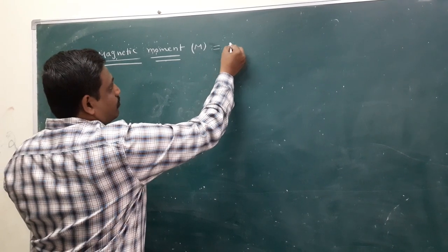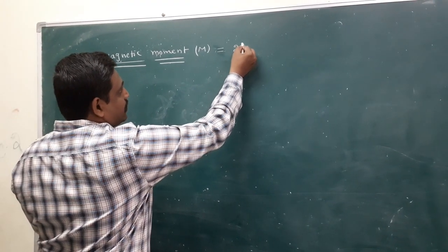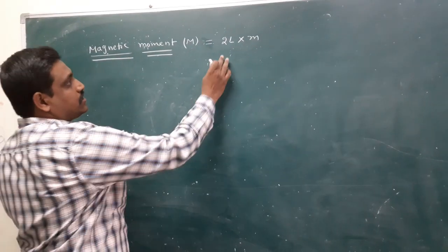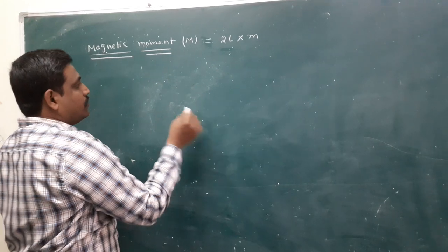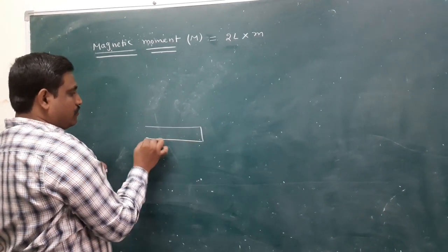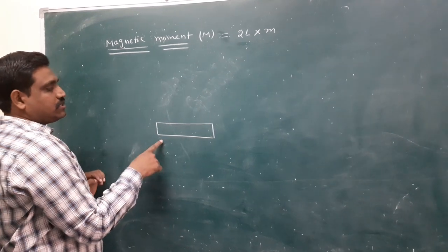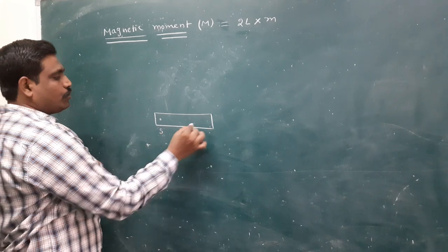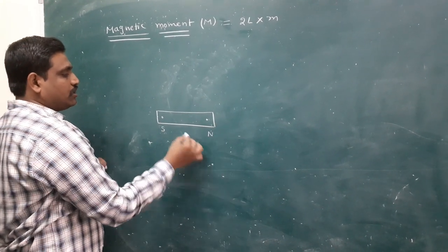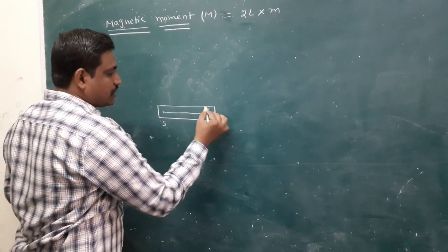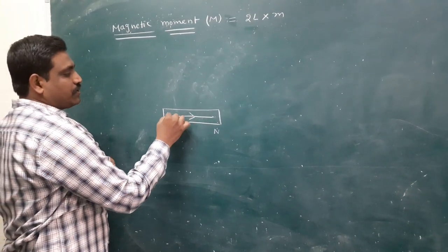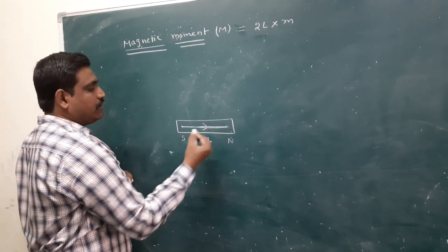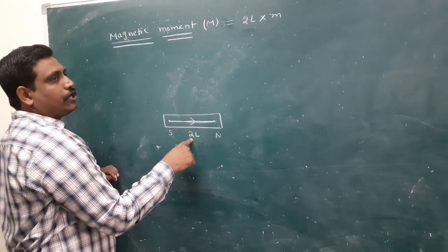Yesterday I discussed the formula: magnetic moment equals magnetic length into pole strength. Magnetic length is the shortest distance between the two poles of a magnet. Every magnet has two poles — one is south pole, the other is north pole. The shortest distance between these two poles is called magnetic length.